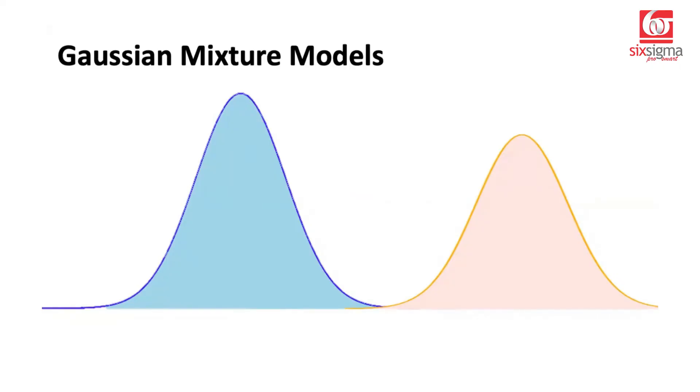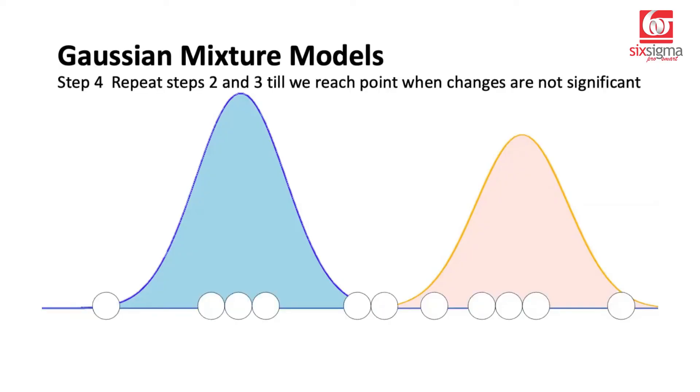Now we are supposed to repeat certain steps. So with respect to these distributions, now let's look at the data points all over again. And once again, we need to determine the responsibility. Notice that responsibility is influenced by the Gaussians, and Gaussian parameters are determined by the responsibilities. So it's kind of a cyclic process. We started with the random Gaussian distributions, computed the responsibilities. Then based on those responsibilities, we revisited the normal distribution parameters like mean and variance. And we are saying we'll once again compute the responsibility.